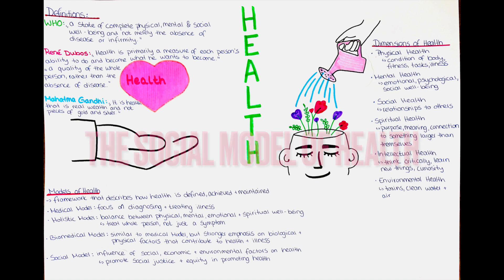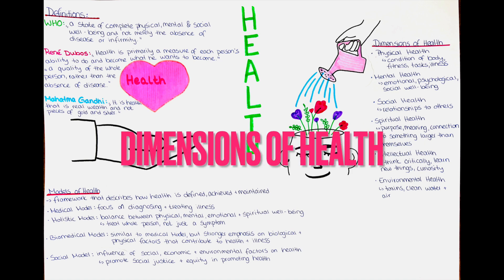The social model of health recognizes the influence of social, economic and environmental factors on health. It views health as a product of the social and economic conditions in which people live and emphasizes the importance of addressing the underlying causes of health disparities. The social model also recognizes the importance of social justice and equity in promoting health and emphasizes the need to address broader social and environmental determinants of health.